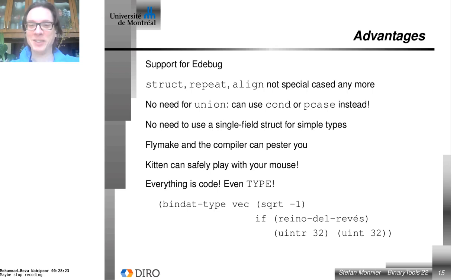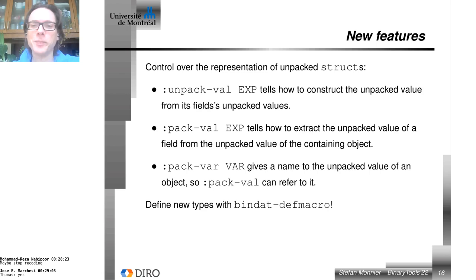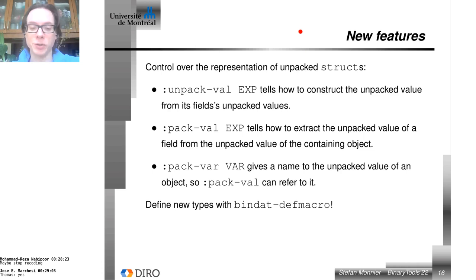So you can have a vector of elements which are either little-endian or big-endian depending on some computed function. Among the new features, beyond reshuffling what was already there, I wanted to add a few things to make the system more useful.